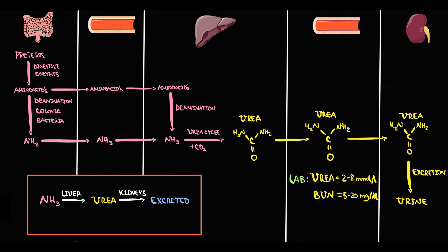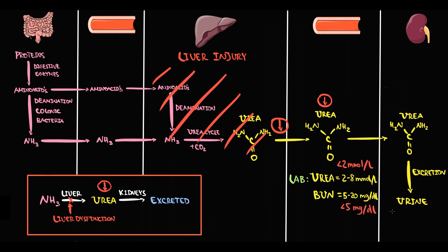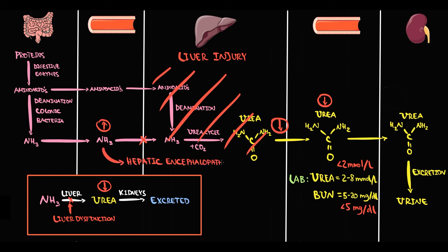If urea or BUN is lower than normal, the most common cause is liver dysfunction. In liver injury, the liver is not working properly, so uptake of ammonia decreases and the urea cycle is impaired. Without a functioning urea cycle, we cannot convert ammonia into urea, so urea level decreases — below 2 mmol/L or below 5 mg/dL for BUN. More dangerously, blood ammonia level rises, which can cause hepatic encephalopathy.